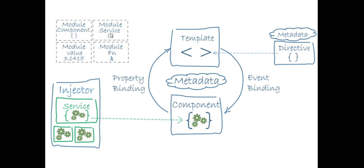From component to template we use property binding; from template to component we use event binding. There is also ng-model, which is used for two-way binding. Whenever there is a change in the template it automatically gets reflected in the component, and whenever something changes in the component it automatically updates the template.